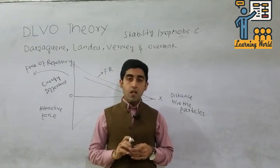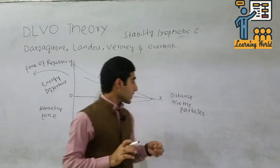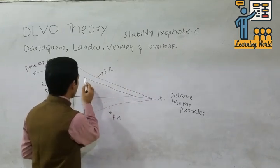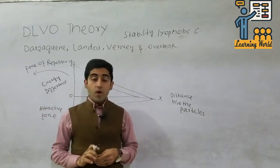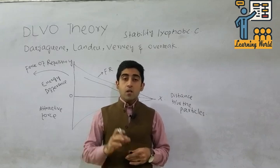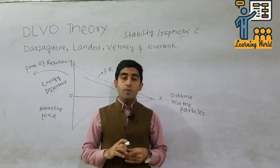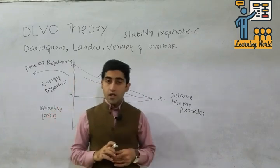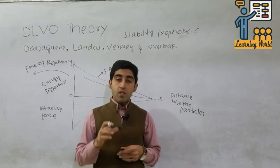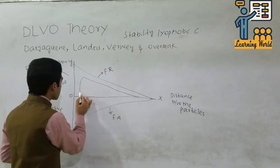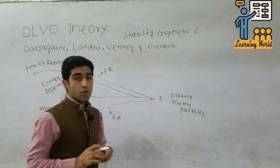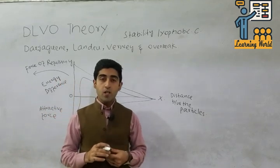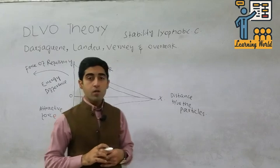If the particles have the same charges, forces of repulsion occur. At the starting point the particles will repulse each other and the curve will be at this position. But with the passage of time, the particles will attract each other because the surface orbitals of the particles will form bonds with each other. Strong bond formation occurs, the colloidal particles attract each other, coagulation occurs, and they settle down.